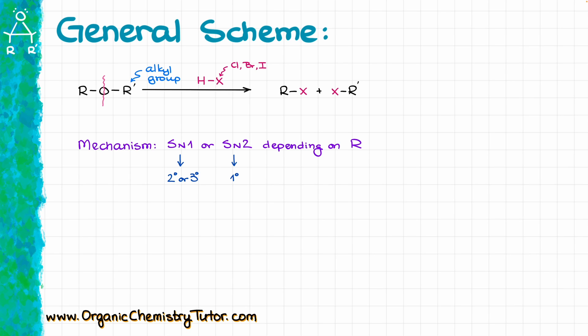That would be the idea for regular ethers. Now, what if we have a cyclic ether where our R groups are actually interconnected? That means that in the final product, instead of two alkyl halides, we are going to end up with a single molecule — unless of course we're cutting our molecule in multiple places. Mechanism-wise, though, there's going to be no difference. So with this in mind, let's look at a few examples.